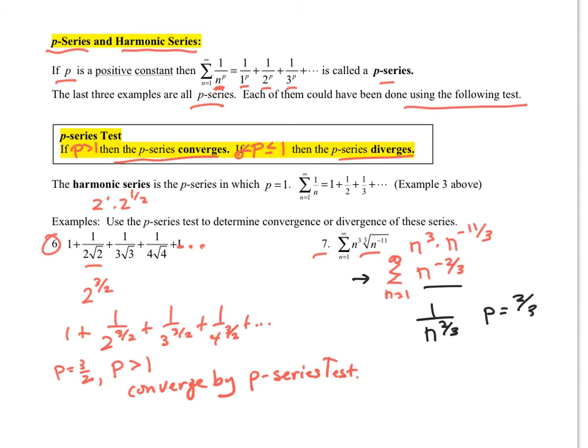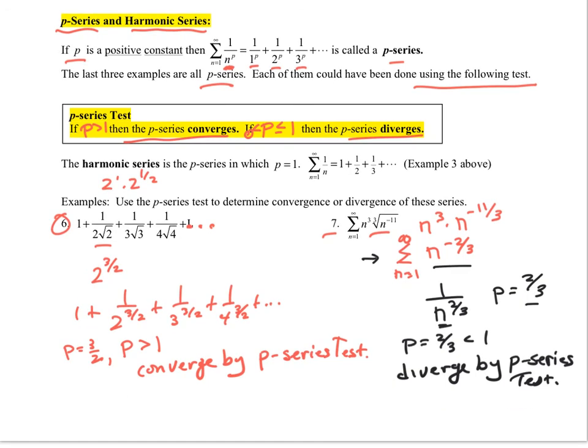So really, p equals 2 thirds. You have to put it in the denominator, the n, to read off what p is. Regardless, p equals 2 thirds, which is less than 1. So this is going to diverge by the p-series test.